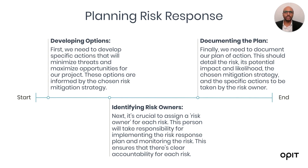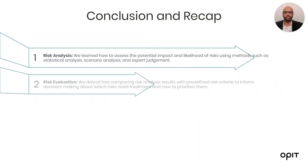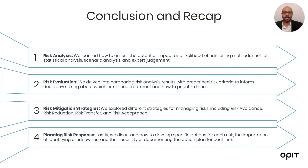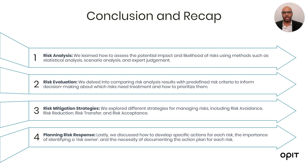Before we end, let's quickly recap what we covered today. First, we talked about risk analysis — assessing the potential impact and likelihood of risk using methods such as statistical analysis, scenario analysis, and expert judgment. Then we talked about risk evaluation — comparing risk analysis results with predefined risk criteria to inform decision-making about which risks need to be treated and how to prioritize them. Then we talked about risk mitigation strategies, including risk avoidance, risk reduction, risk transfer, and risk acceptance.